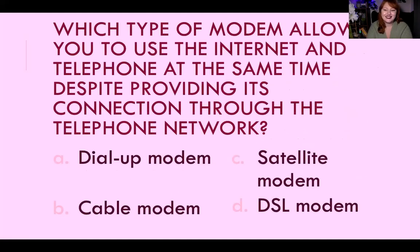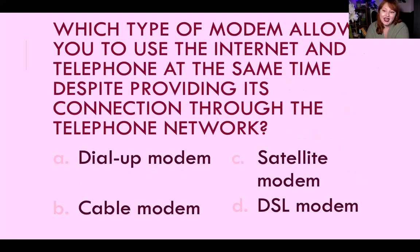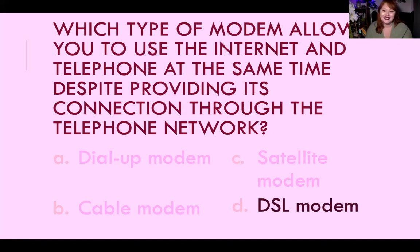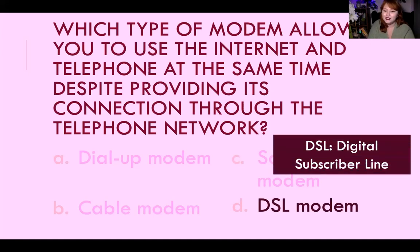Which type of modem allows you to use the internet and the phone at the same time? I'm talking about a landline phone, one plugged into a wall. Back in the day there was dial-up, which sends super high frequencies. You've also got cable, and satellites. But the answer is DSL — digital subscriber line. It is the modem that allows you to access the internet without interrupting the phone. You plug it into a phone jack in the wall, but it doesn't actually use the phone line, just the network.